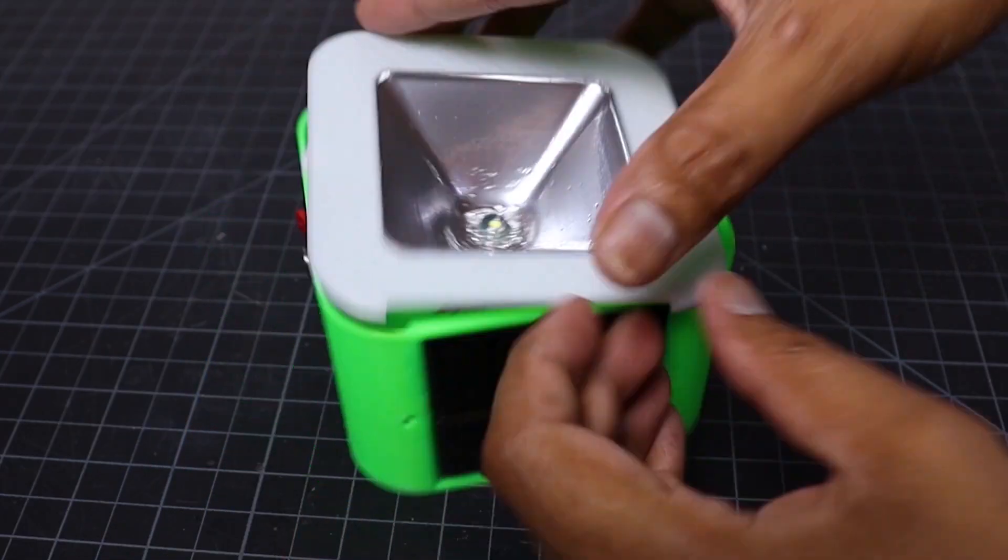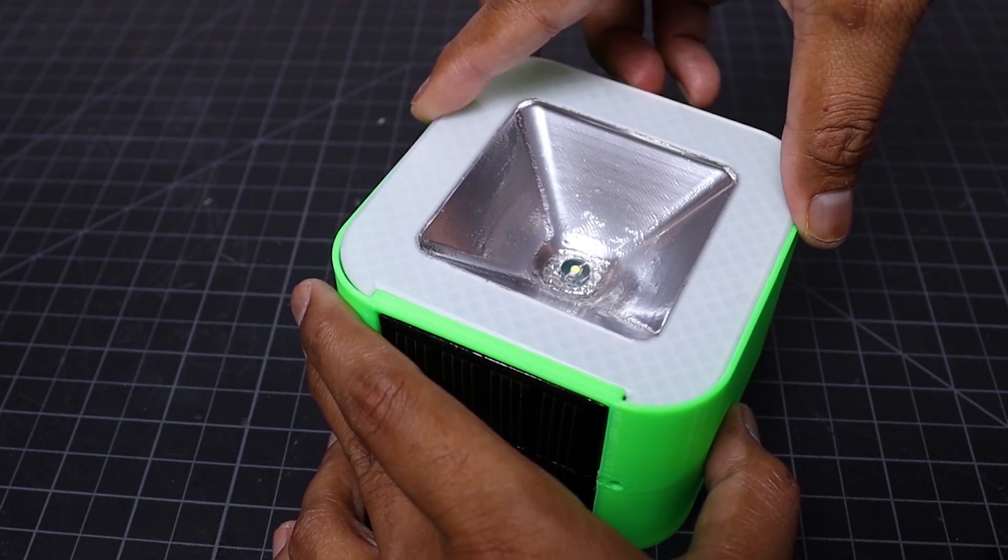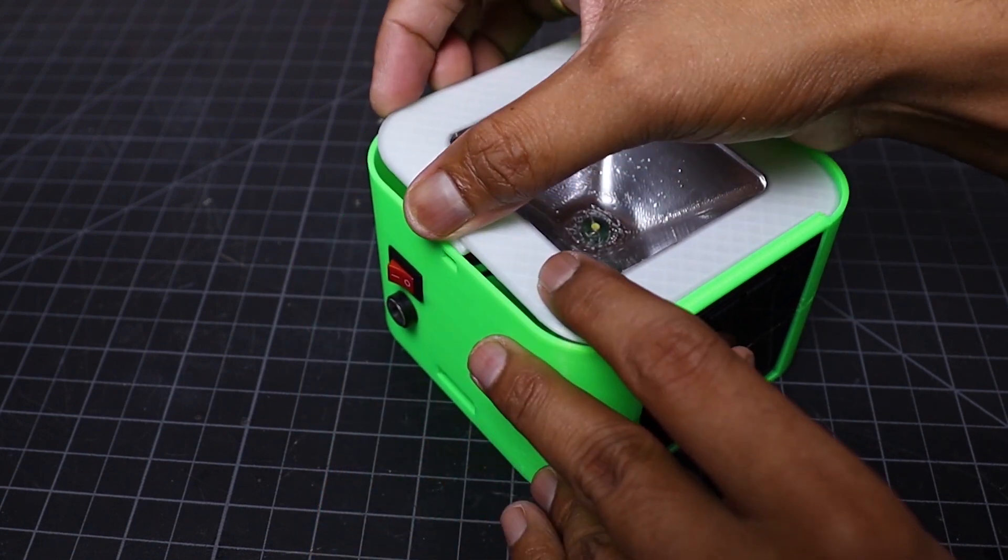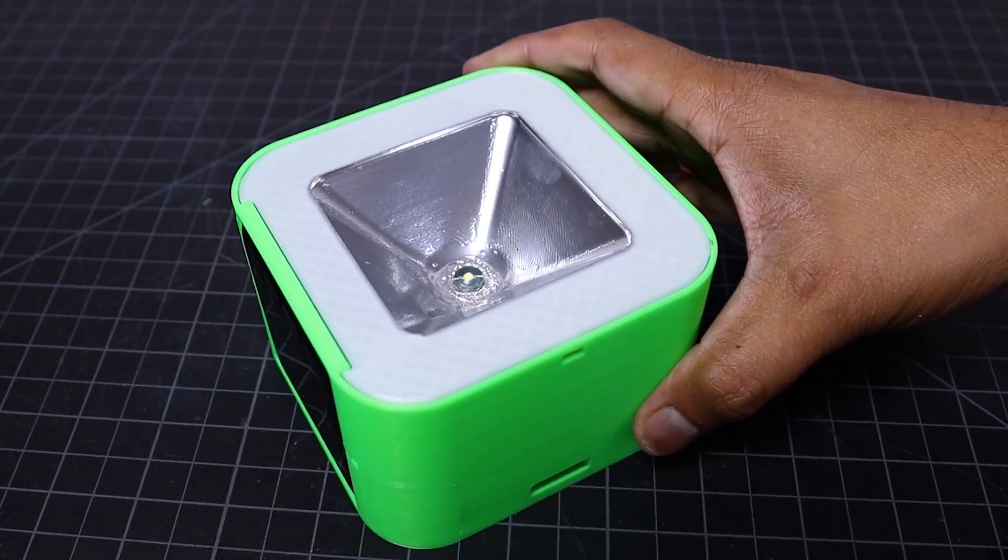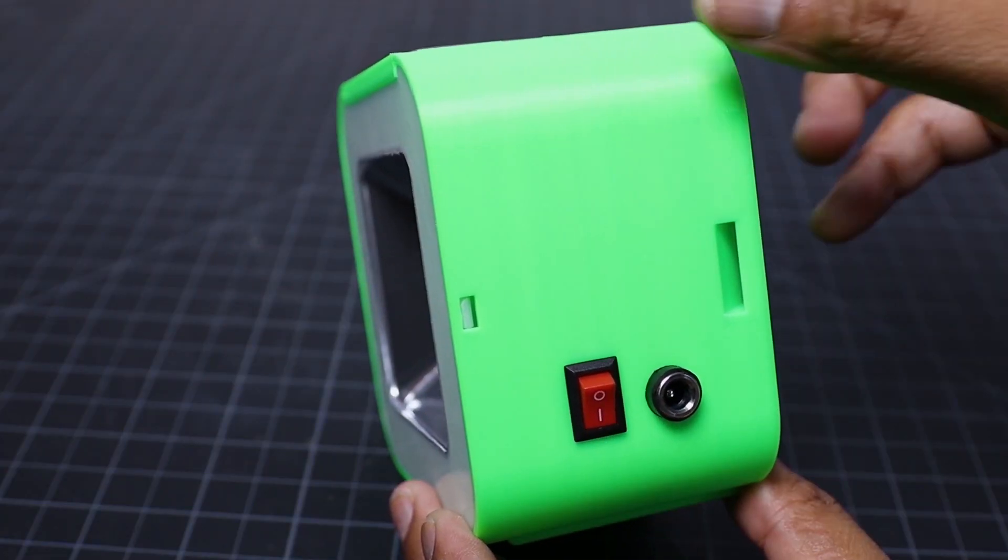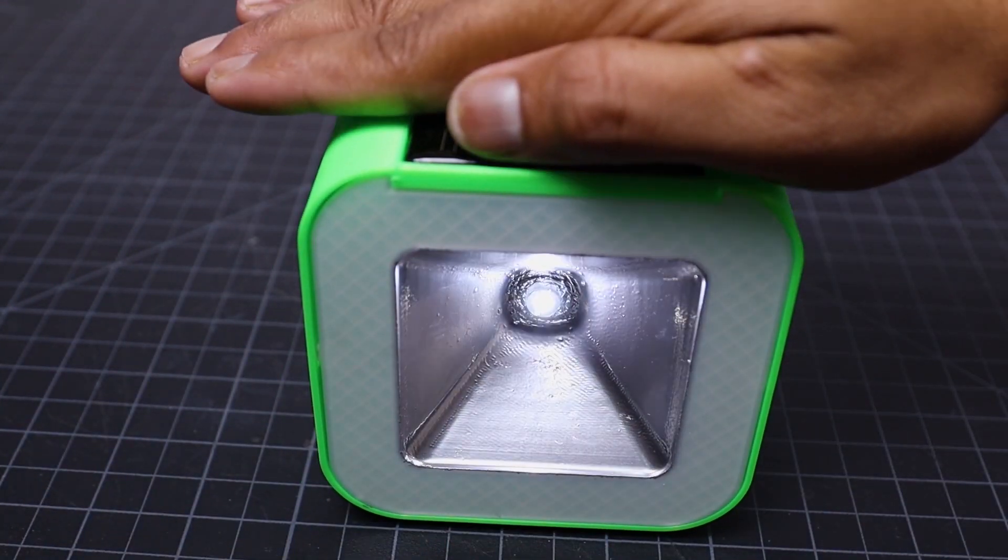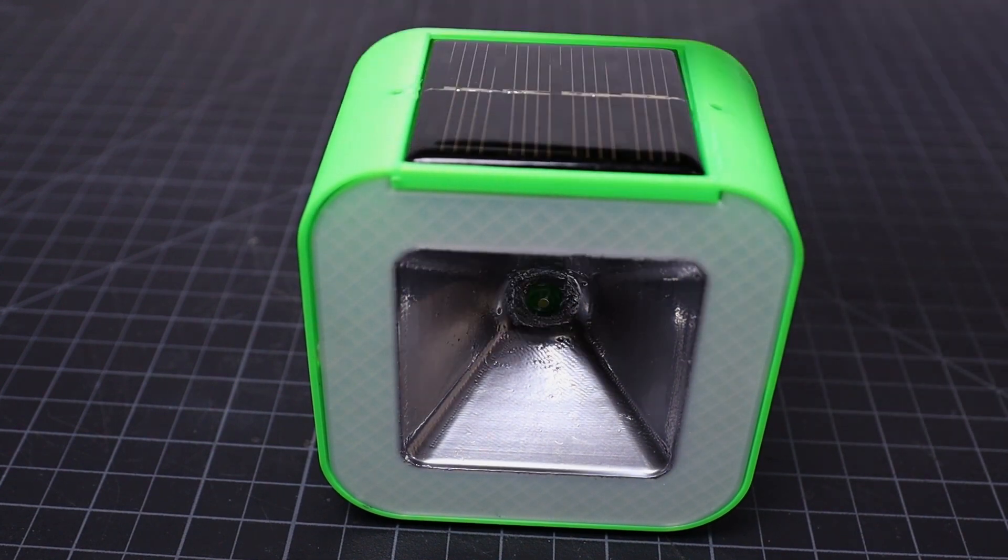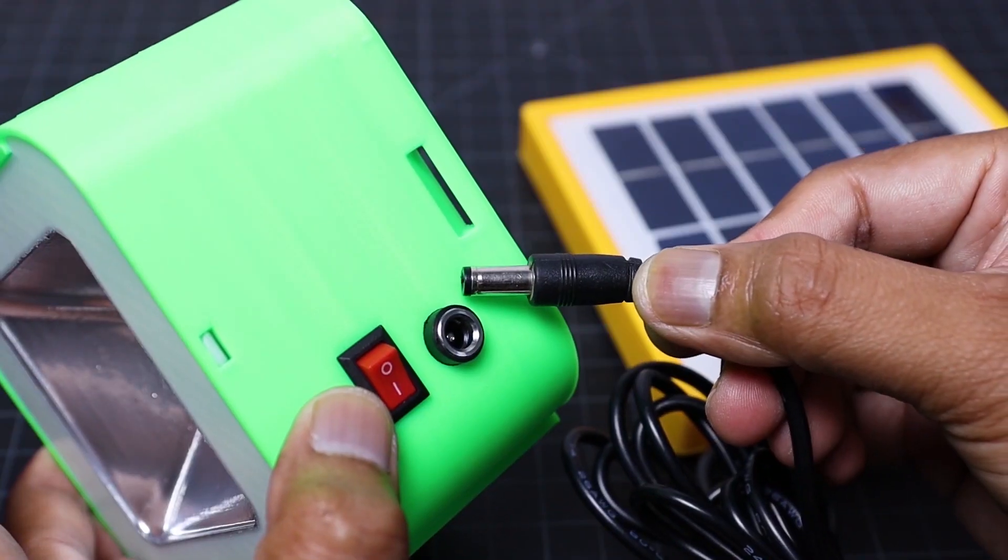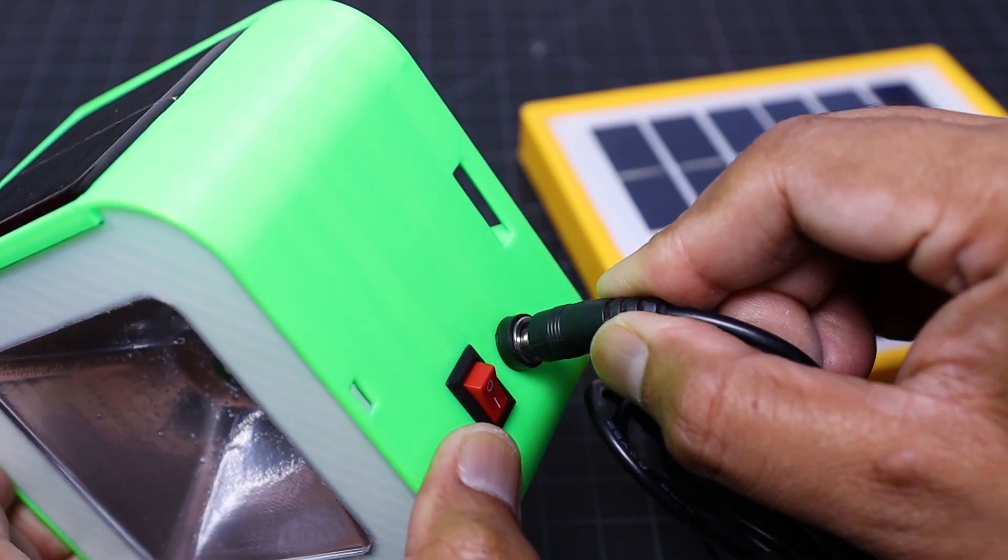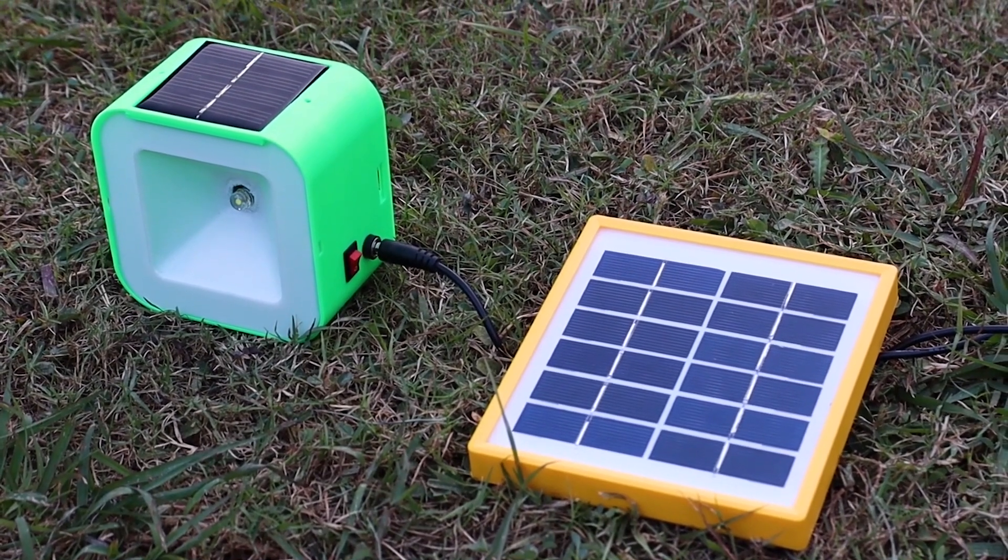This is a snap and fit enclosure so there will be no requirement of additional mounting screws. You can plug in a 2-5 volt solar panel for faster charging. Before the first use of the solar lamp, I will recommend to charge the battery fully.